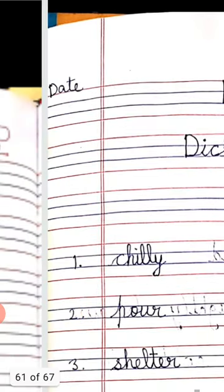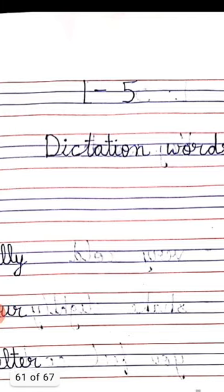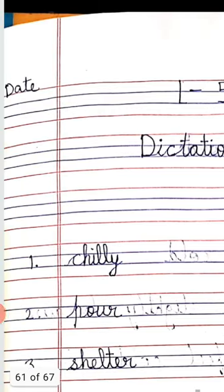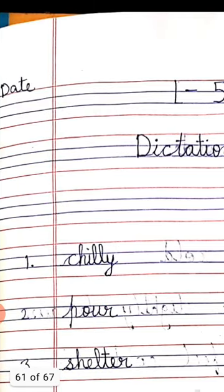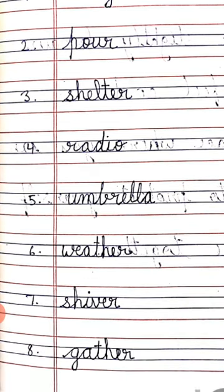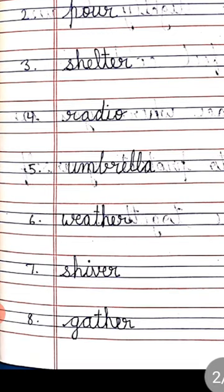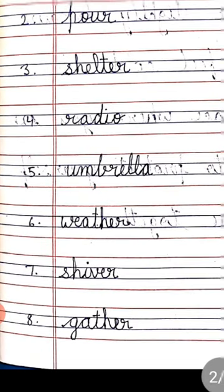Write the date. Lesson 5 dictation words. Number 1: chilly. Number 2: port. Number 3: shelter. Number 4: radio. Number 5: umbrella. Number 6: weather. Number 7: shiver. Number 8: gather.